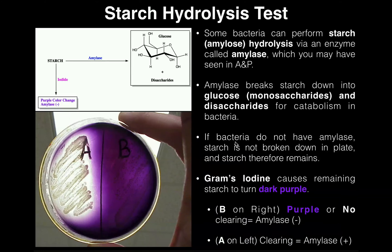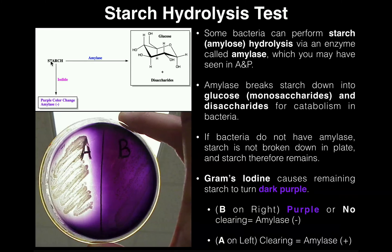If bacteria do not have amylase, then they're not going to be able to convert starch into the products — in other words, they're not going to be able to break down starch. However, if bacteria do possess the enzyme amylase, they're going to be able to break down the starch. And so anywhere where the bacteria are that have the enzyme amylase, you're not going to have any starch.